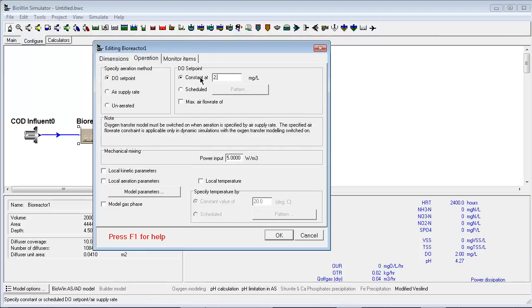For example, for this aeration tank we can input a DO setpoint. Perhaps there are restrictions on the amount of air that can be supplied to this aeration tank and that can be input if we like.